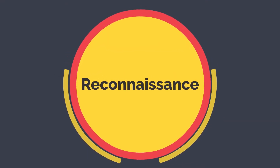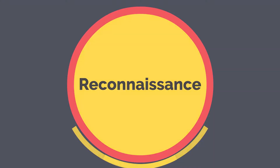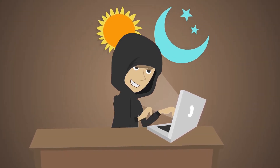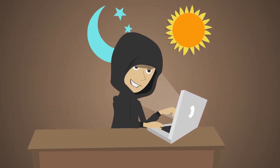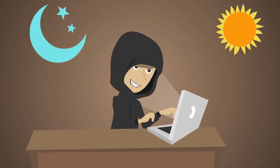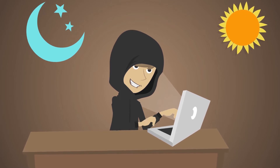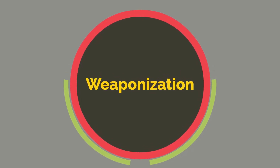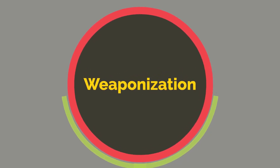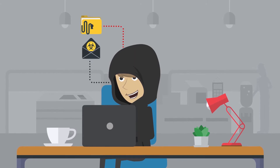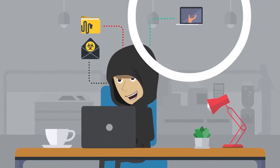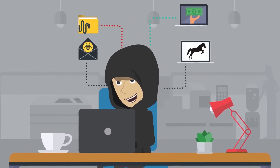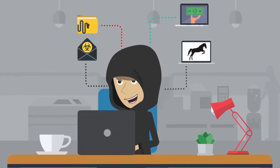Step 1 - Reconnaissance: The first thing a hacker does when planning a cyberattack is identify a vulnerable target that can provide them with a point of entrance. Step 2 - Weaponization: In this phase, the hacker must collect all the tools they need to gain access to the network and exploit any vulnerabilities that they find.